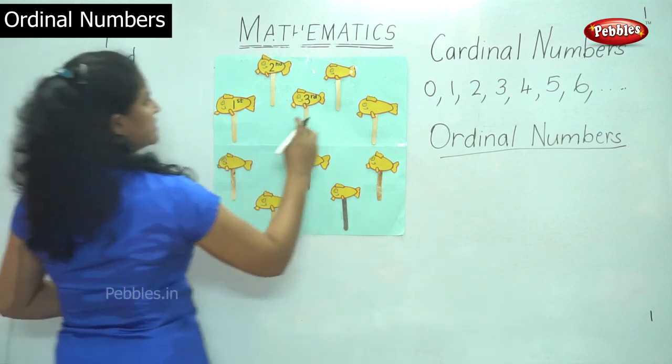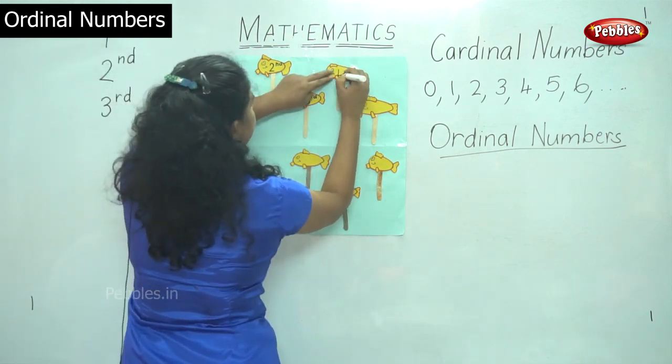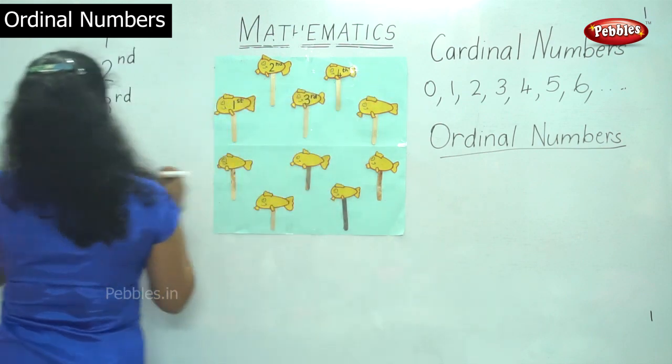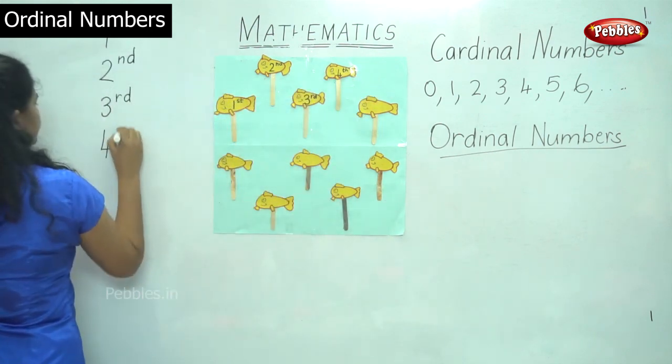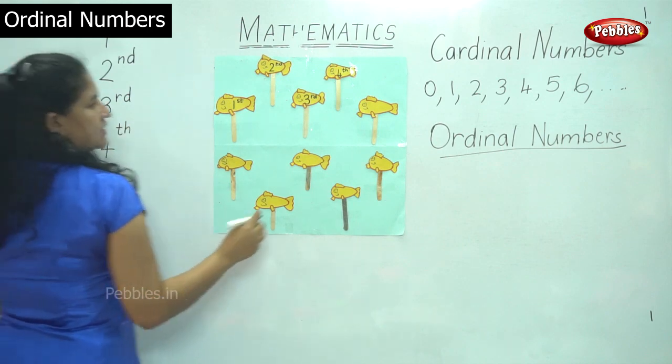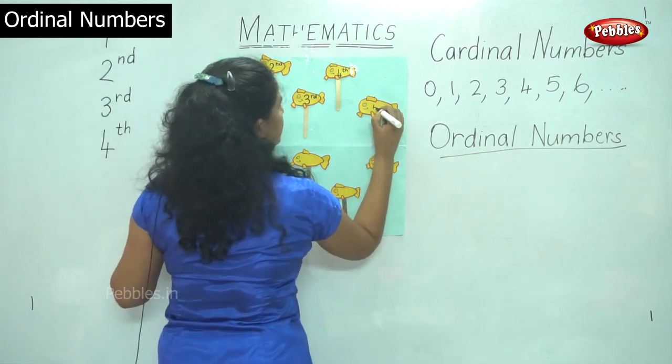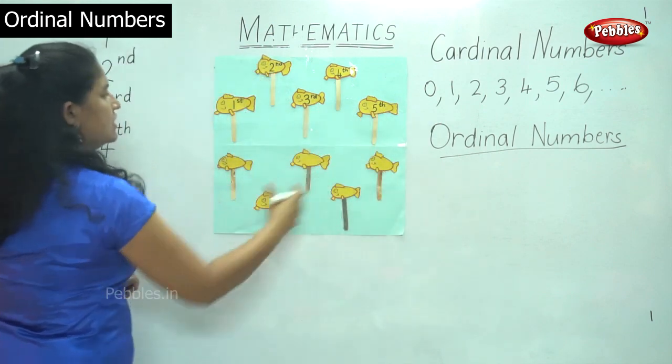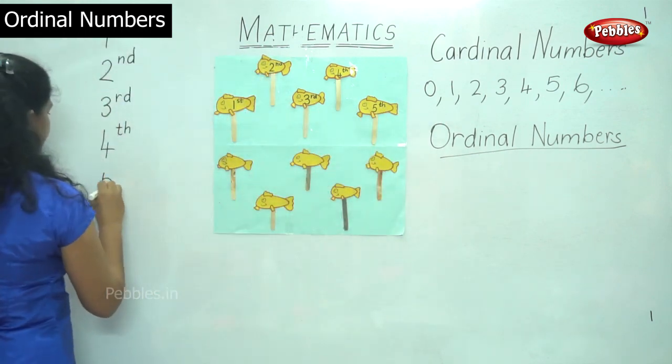The next is fourth. Fourth fish. We write th on the top. So it is fourth with th on the top. Here we write fifth. So this is the order of the fish. So it is fifth.